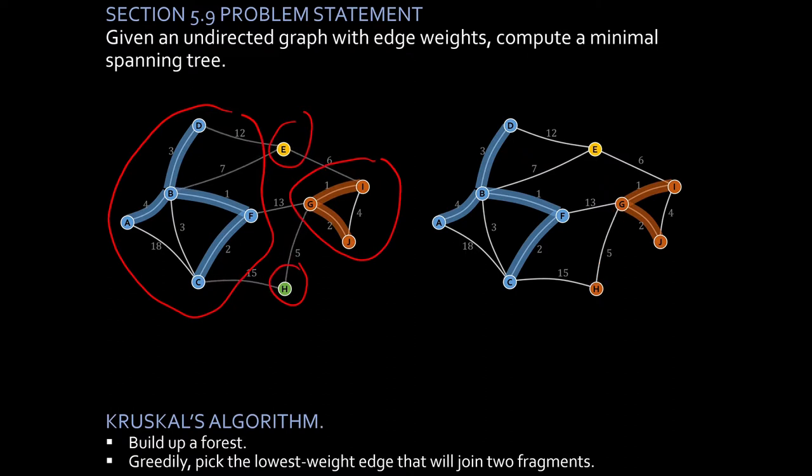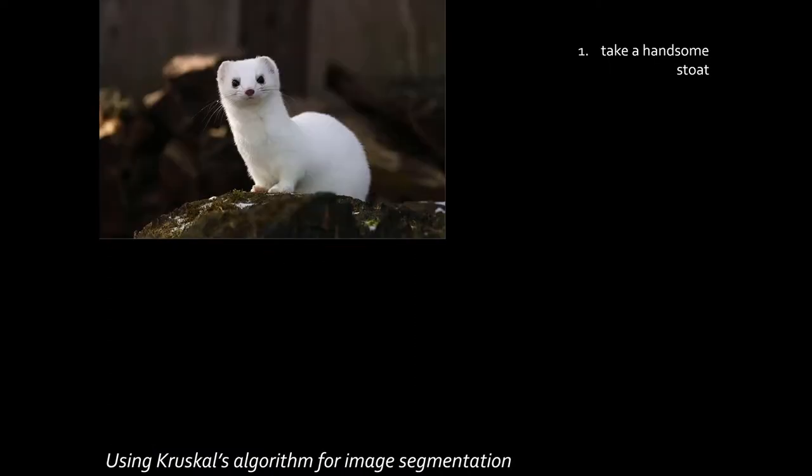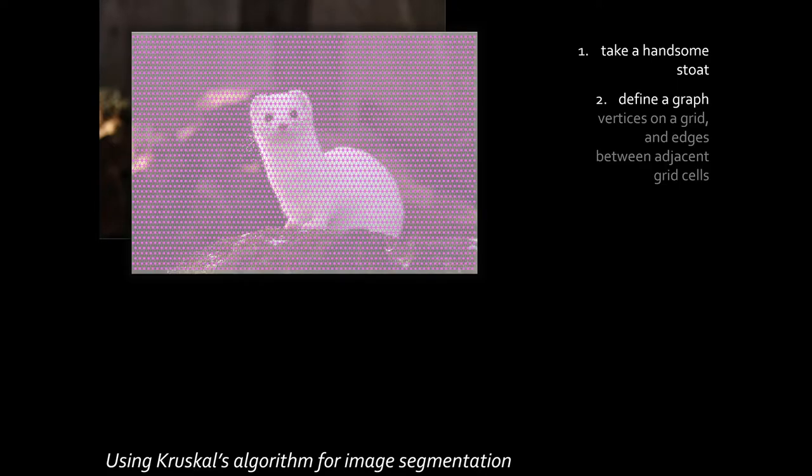We also looked at an application of this algorithm: image segmentation. We start with an image, define a grid, place vertices on a grid and we have edges between adjacent vertices. Here I've made a hexagonal grid.